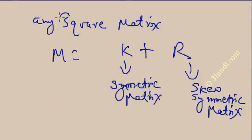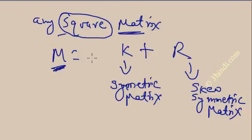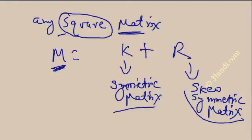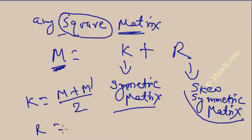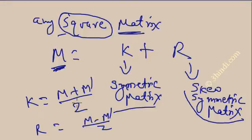Note this rule is applicable only for square matrices. Any square matrix M can be expressed as the sum of a symmetric matrix K and a skew-symmetric matrix R, where K equals (M plus M dash) divided by 2, and R equals (M minus M dash) divided by 2. We are now going to prove this.